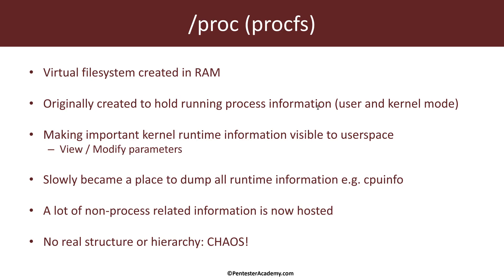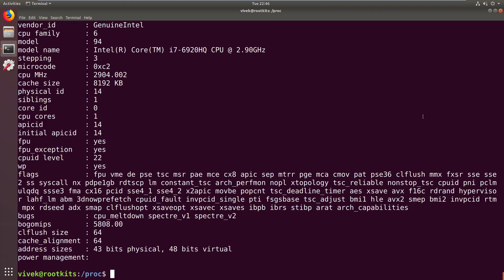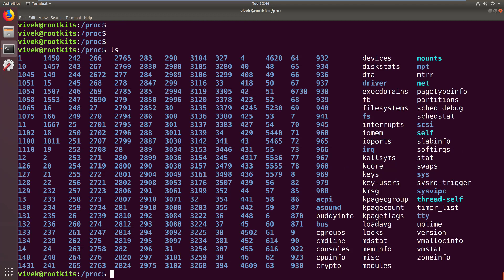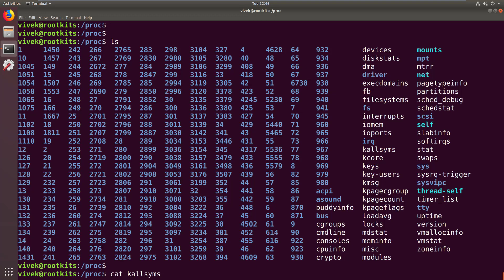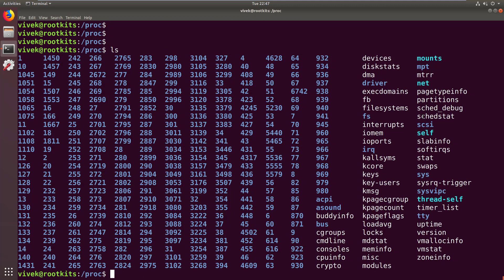The original idea of /proc was to provide information about running processes from the kernel side to the user space side. Very old versions of the program PS were actually using /proc to display information about running processes. Even though it started off sharing runtime process information, it quickly morphed into a dumping ground for pretty much everything. If we look at different files, we can see the cpuinfo file, which has information about the current CPU, and kallsyms, which is basically all the symbols currently in various modules in the kernel.